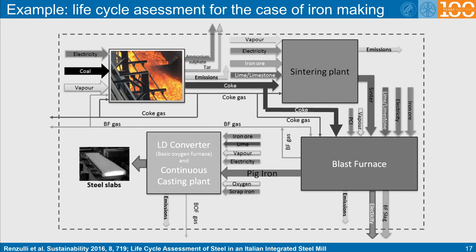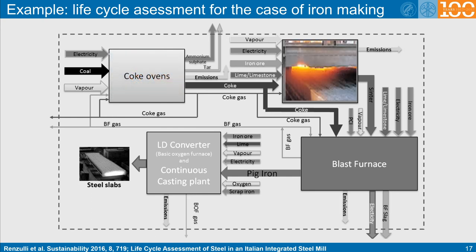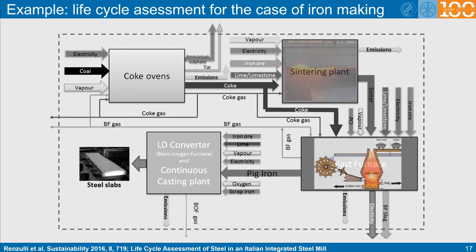This flow diagram shows the input of coal, vapour, and electricity that is used for operating the coke oven plant, which then feeds the sintering plant, which in turn is the basis to operate blast furnaces, where the actual reduction of the iron ore takes place. This is also the production step where most of the CO2 is produced.